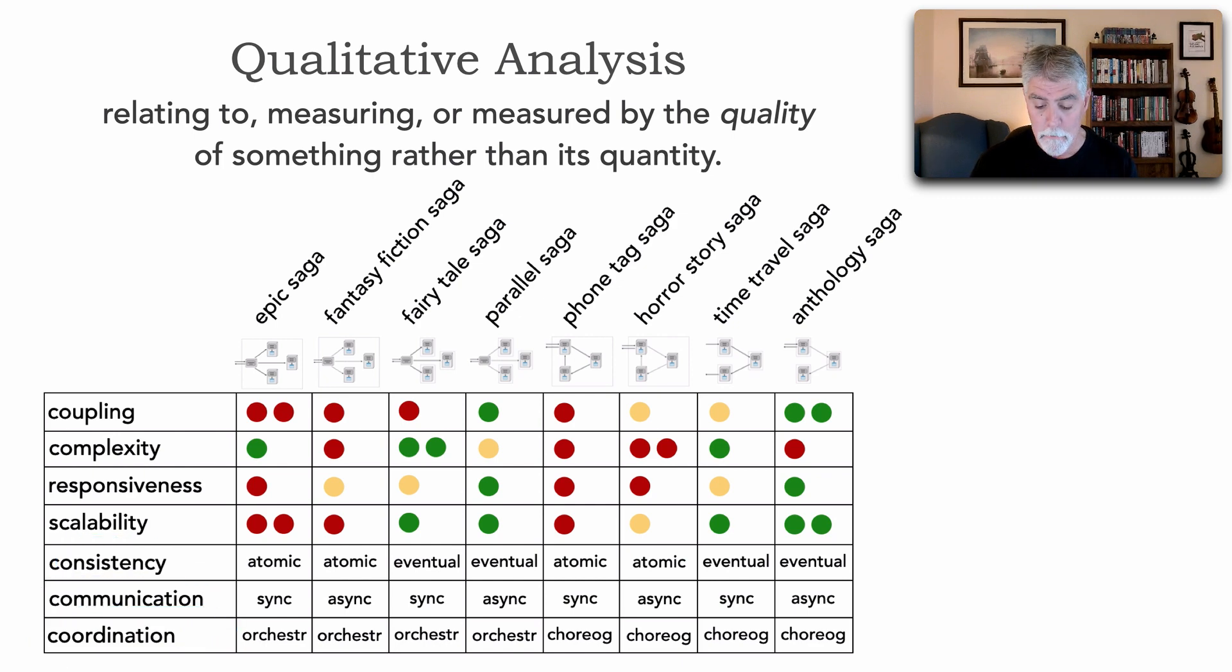Now, using these three, we can now do qualitative analysis because our concern is scalability. If we look, we see that we've got different levels, qualitatively, of scalability within the transactional sagas. As a matter of fact, over here we see green within the fairy tale saga, the parallel saga, time travel, and anthology. But if we look, we can see the comparative analysis. If we were to try to use the horror story, please don't use that one. That's why Neil Ford and I named it the horror story saga. But also, if we're forced into atomic transactions that are synchronous and orchestrated, we notice our scalability is probably the least out of all of these types of transactional sagas.